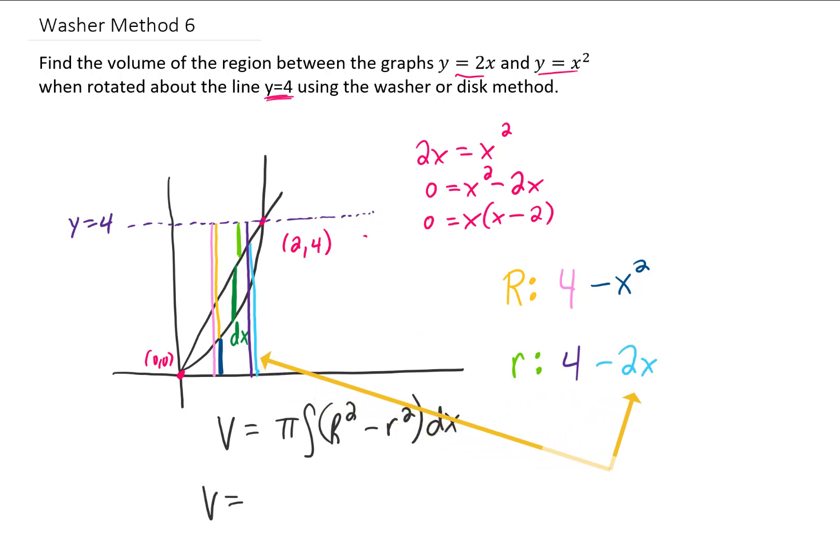Okay, you might need to take a little bit of time with that to make all the colors make sense, so feel free to hit pause on your browser whenever you need. But plugging in that outer radius of 4 minus x squared and that inner radius of 4 minus 2x gives us this. And since we're integrating with respect to x, we need to look at the largest and smallest values of x in this region, which are 0 and 2.